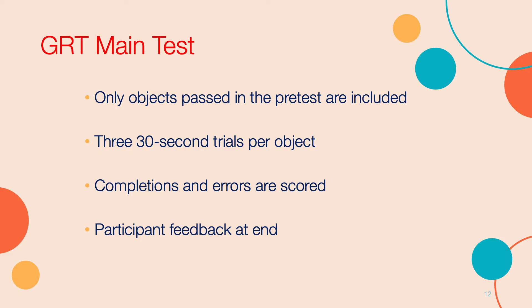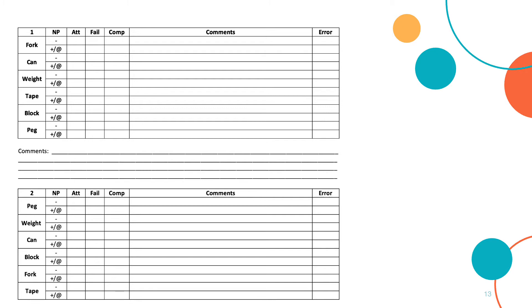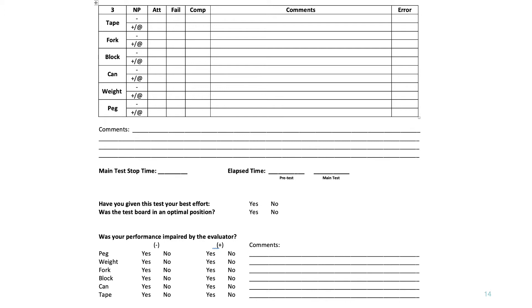The main test immediately follows the pretest. Only the objects that were successfully passed in the pretest are included in the main test. Three 30-second trials of each object will be scored for completions and errors. At completion of the main test, participant feedback is sought — the participant is asked to verify whether they gave their best effort, whether the test board was in an optimal position, and whether the examiner interfered with their performance.